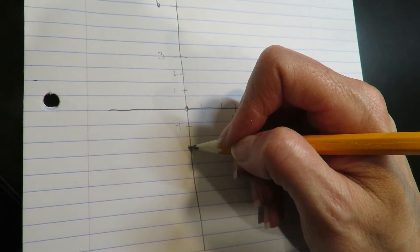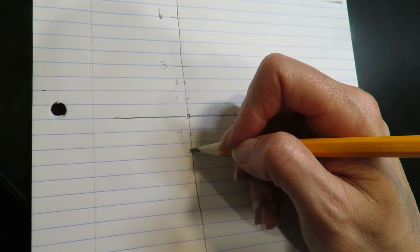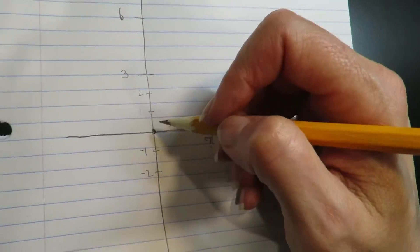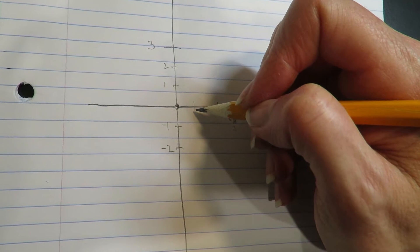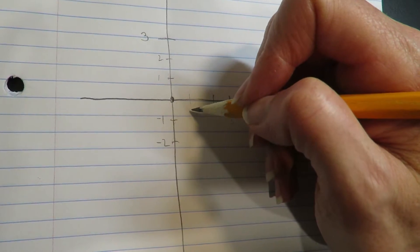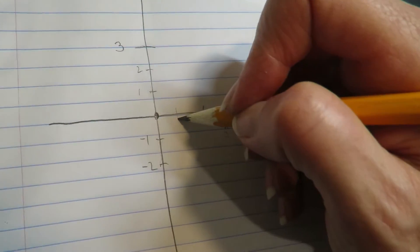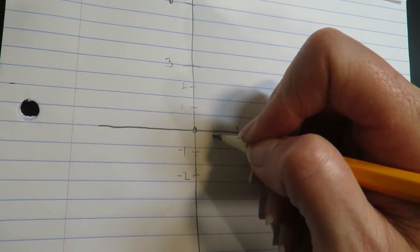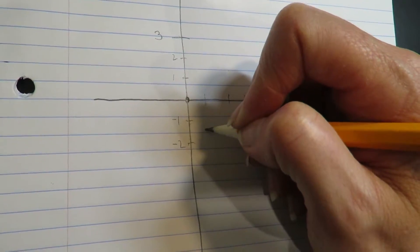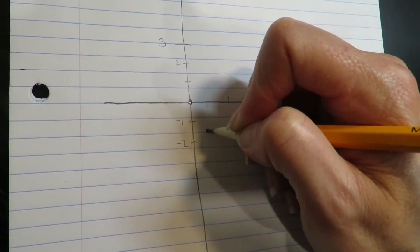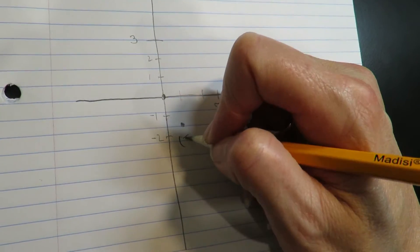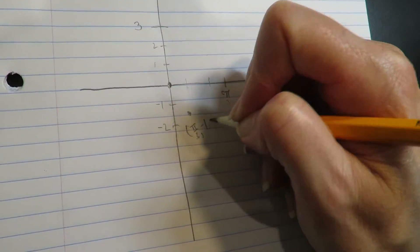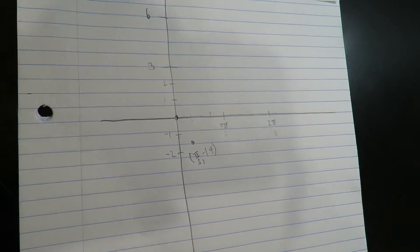Okay, so let's see here. Negative, what is the first one? π/3 and negative 1.4. So π/3 and negative 1.4-ish around here. π/3 and negative 1.4. All right, that's my min.